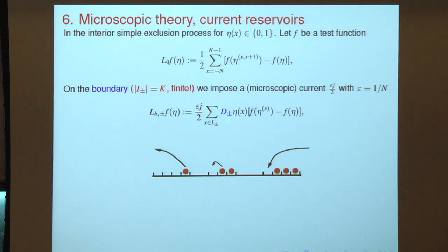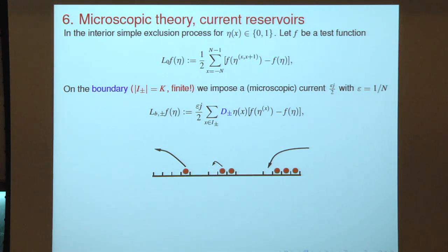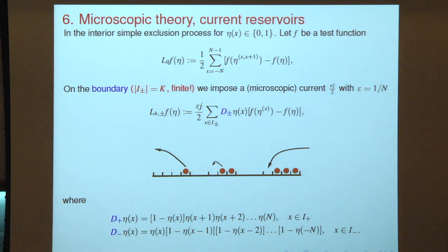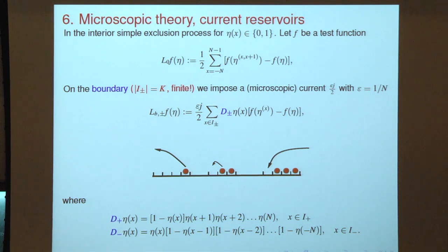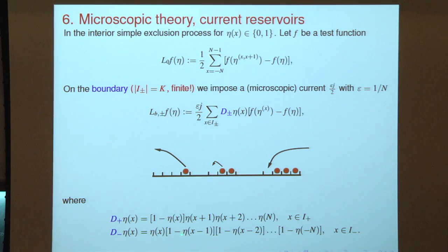The generator for this process: D plus of eta — putting to the first available position from the right. When eta of x is zero and all others are one — meaning all other positions are occupied — I put the particle at the first available position x from the right. And similarly from the left: if positions are empty, there is nothing to remove. So I remove from the first position where there is a particle.